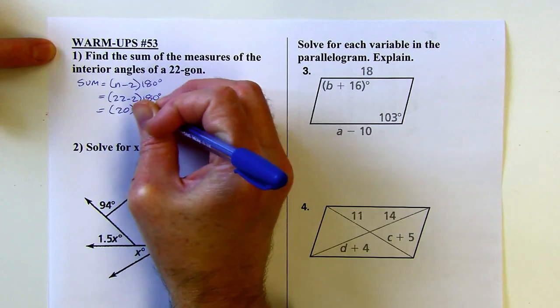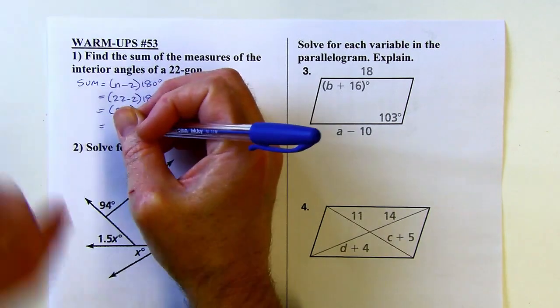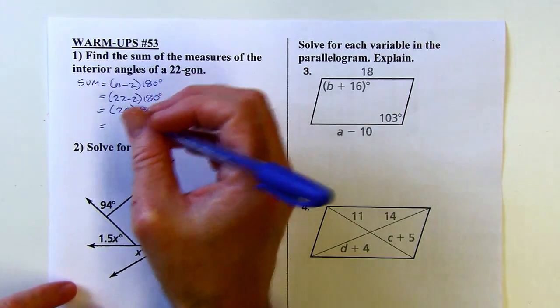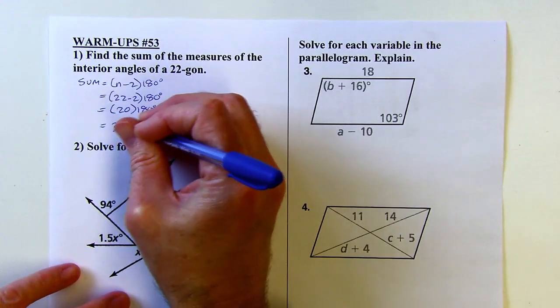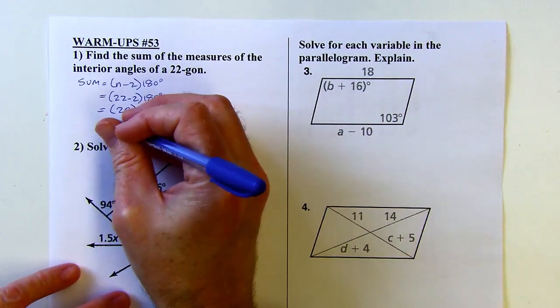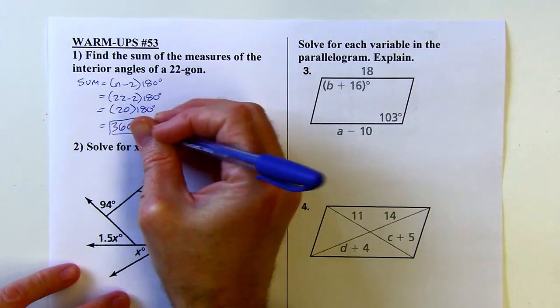Okay, do that subtraction first, and then the multiplication. And this is going to be 2 times 180 is 360. So this is 360 with one more zero, 3600 degrees.